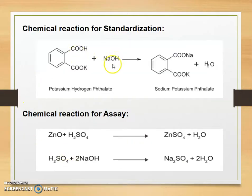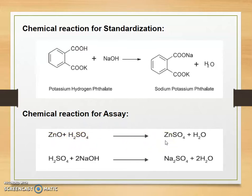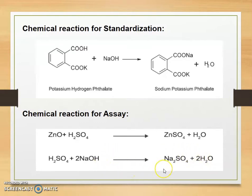Ammonium chloride is used to prevent the precipitation of zinc hydroxide, which would interfere with end point detection. The chemical reaction for standardization: potassium hydrogen phthalate reacts with sodium hydroxide to give sodium potassium phthalate plus water. The chemical reaction for the assay: zinc oxide plus H2SO4 gives zinc sulfate (ZnSO4) plus H2O. Excess H2SO4 reacts with sodium hydroxide to form sodium sulfate plus 2 molecules of water. The assay of zinc oxide is an example of back titration, where excess H2SO4 is reacted with sodium hydroxide.